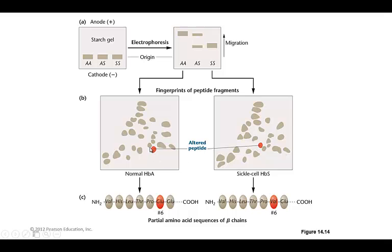The altered peptide is highlighted. After isolating it and identifying the sequence, they found that whereas a normal individual has a glutamate at that position, individuals with sickle cell trait have a valine instead. Everything else is pretty much exactly the same. So really just one single amino acid change can have a dramatic impact on the individual.